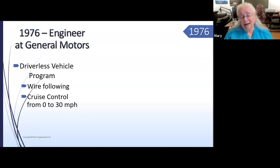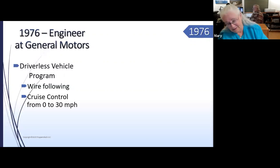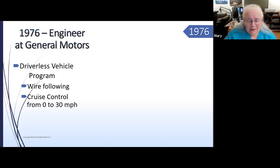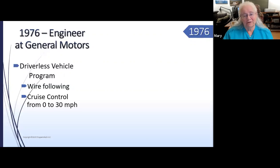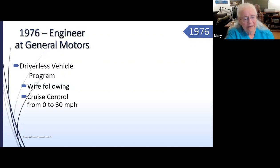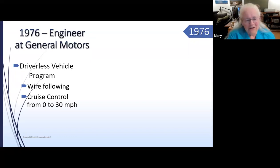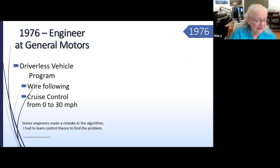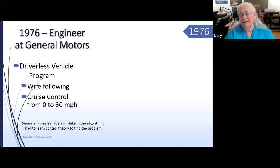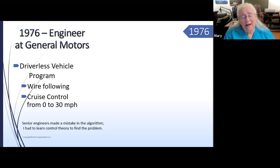I was supposed to program the TI 990 to do the algorithms their engineers told me — cruise control for startup and shutdown — and it didn't work. We'd put the software in, drive to the test track, there was a driver who could take over control, and it would just go zoom and slam on the brakes. I was so sure I couldn't find any errors in my software. I went to the engineers and said, could you explain this algorithm to me? They said, we don't have time for that — it's got to be your program.